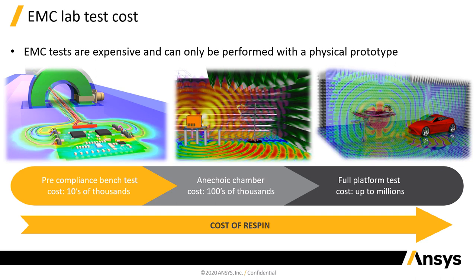Of course, if you have a full platform like a vehicle or an airplane, and you go for a radiated immunity test, as we're seeing here on the right side, or even a lightning strike on an aircraft, and you have to change something on your prototype — if you sum up all of the costs, it could go up to millions of dollars.